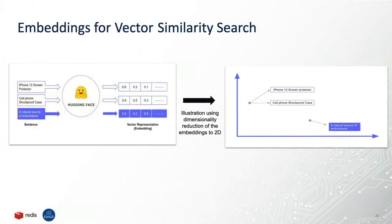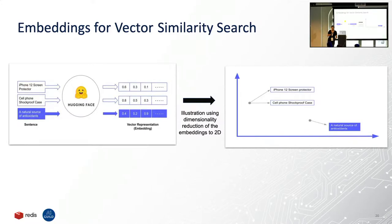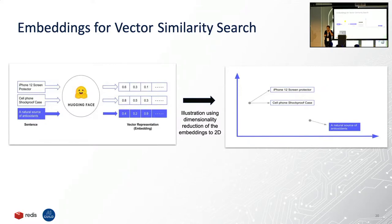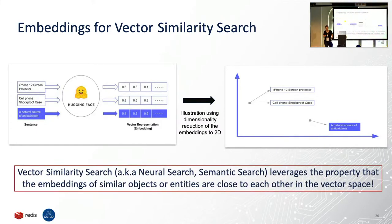Now let's talk about embeddings for vector similarity search. Those embeddings have an important characteristic: objects that are similar in the real world will have embeddings that are close to each other in the vector space. For example, 'cat' and 'dog' will be closer to each other than 'cat' and 'computer' — even though both start with C. The model understands semantics. Similarly, two sentences about iPhone will be closer to each other than a sentence unrelated to phones.